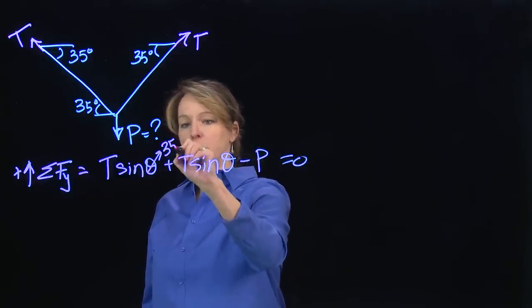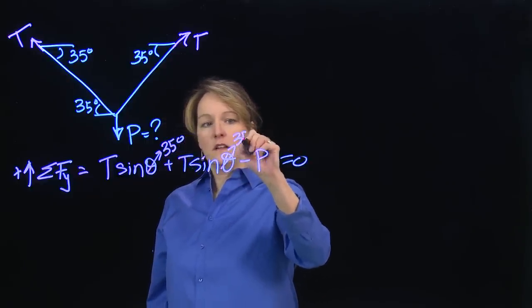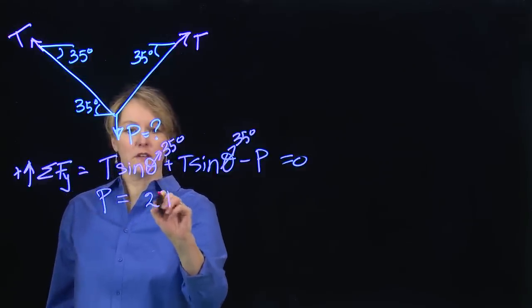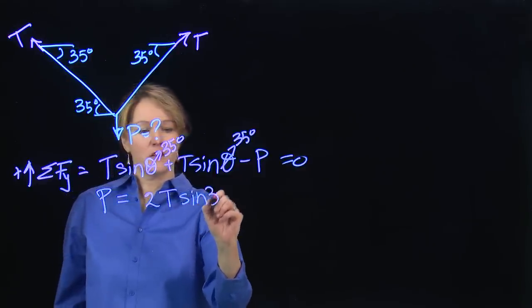We know that this theta is 35 degrees. So I can solve for this downward force P. It's going to be 2T sine 35 degrees.